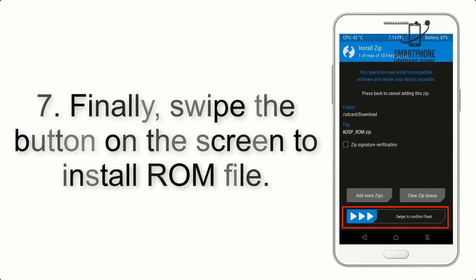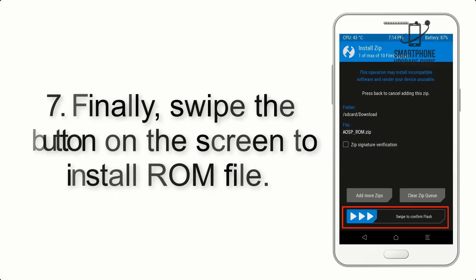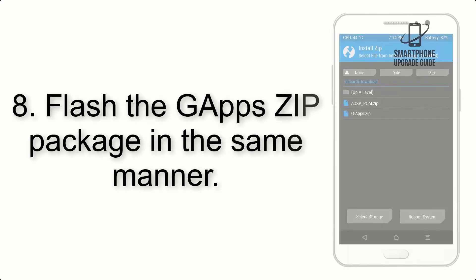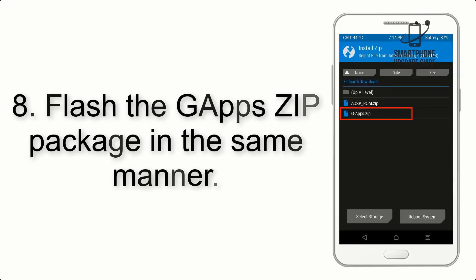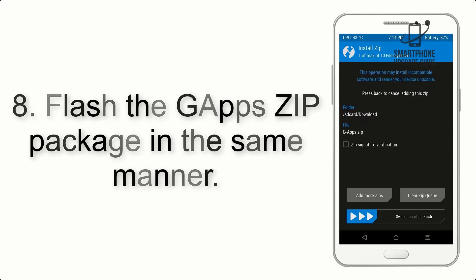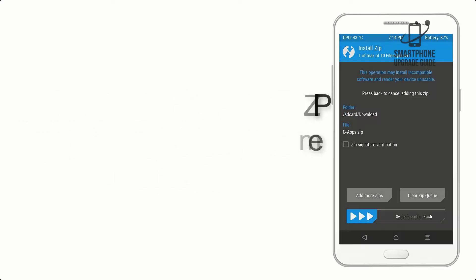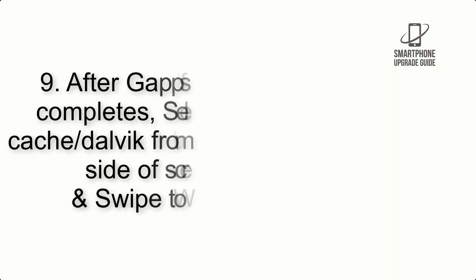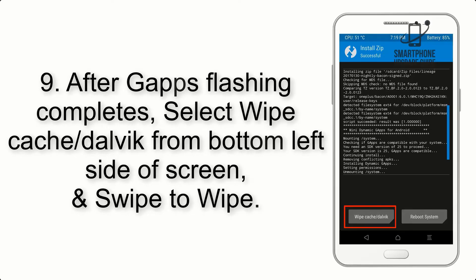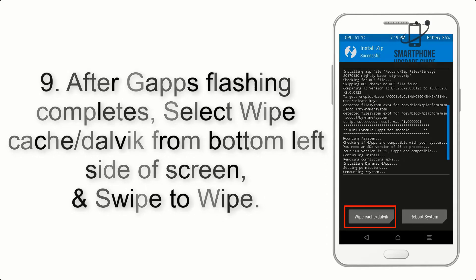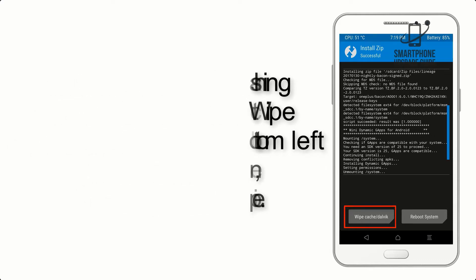Step 7: Swipe the button on the screen to install the ROM file. Step 8: Flash the GApps zip package in the same manner. Step 9: After GApps flashing completes, select Wipe Cache and Dalvik from the bottom left side of the screen and swipe to wipe.